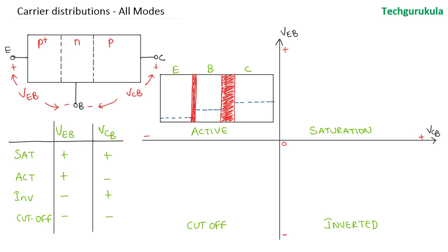Equilibrium minority carrier concentrations would be like this, but under biased condition it would be like this, where this is electron concentration, this is hole concentration, and this is electron concentration. We have seen this carrier distribution very well in the previous sections.